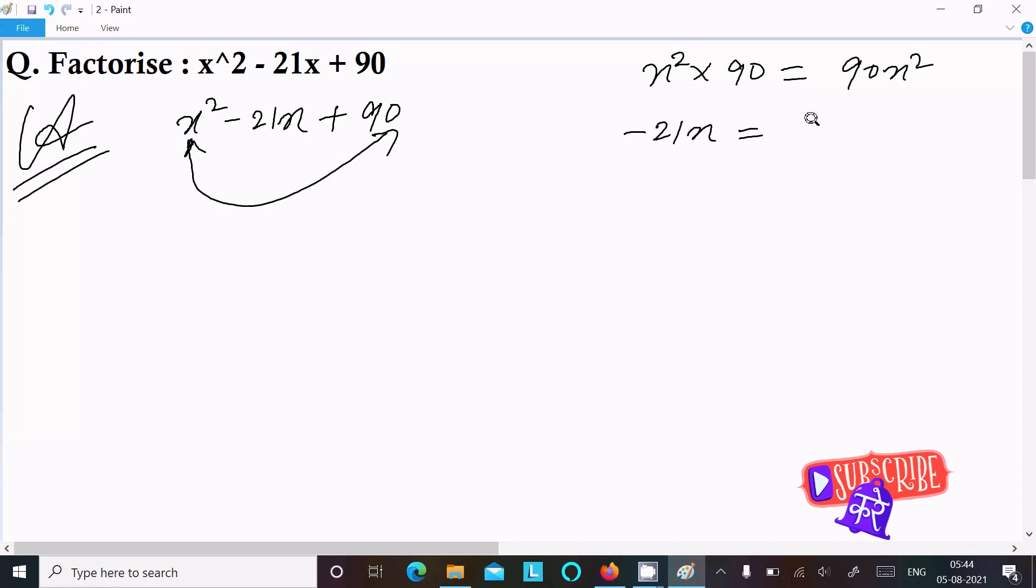21x we can write as -18x - 3x, so this is now equal to -21x. But when I multiply -18x into -3x, we'll get 54x². So 90 and 54 both are not same, so we cannot take this one, it's rejected.